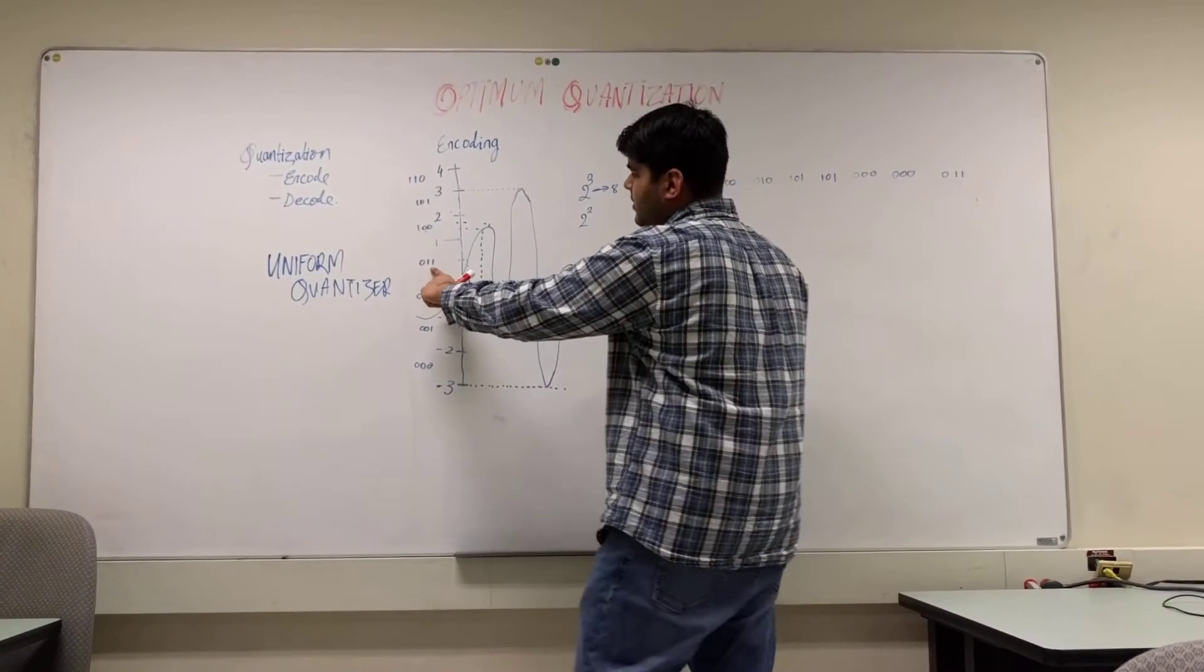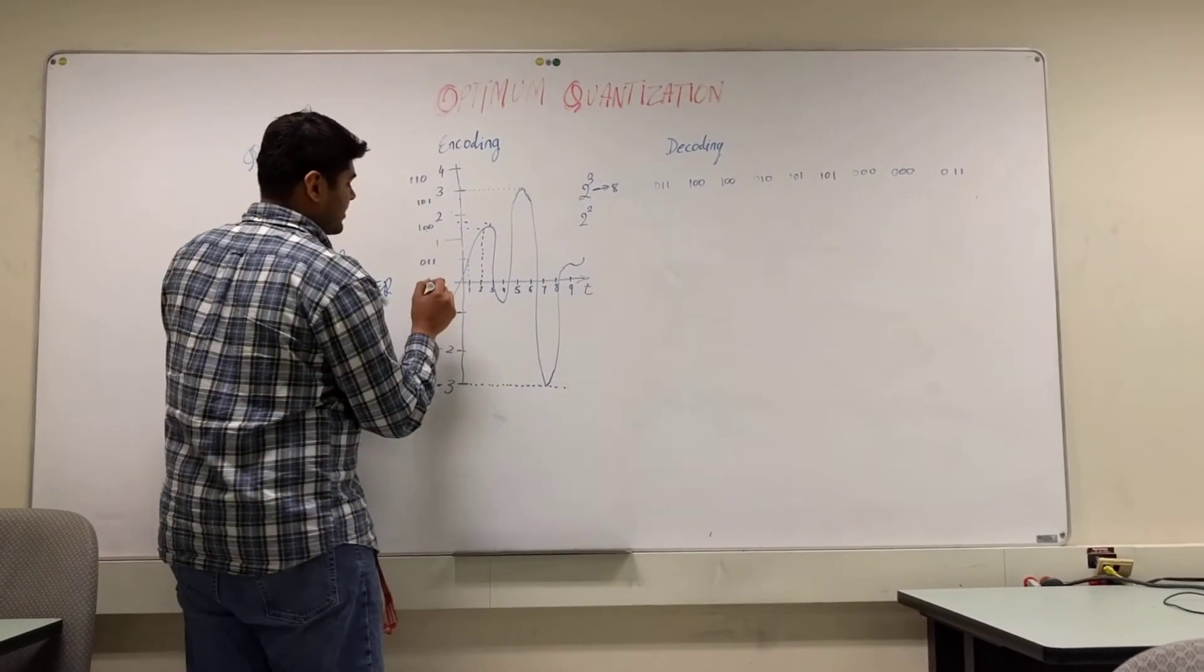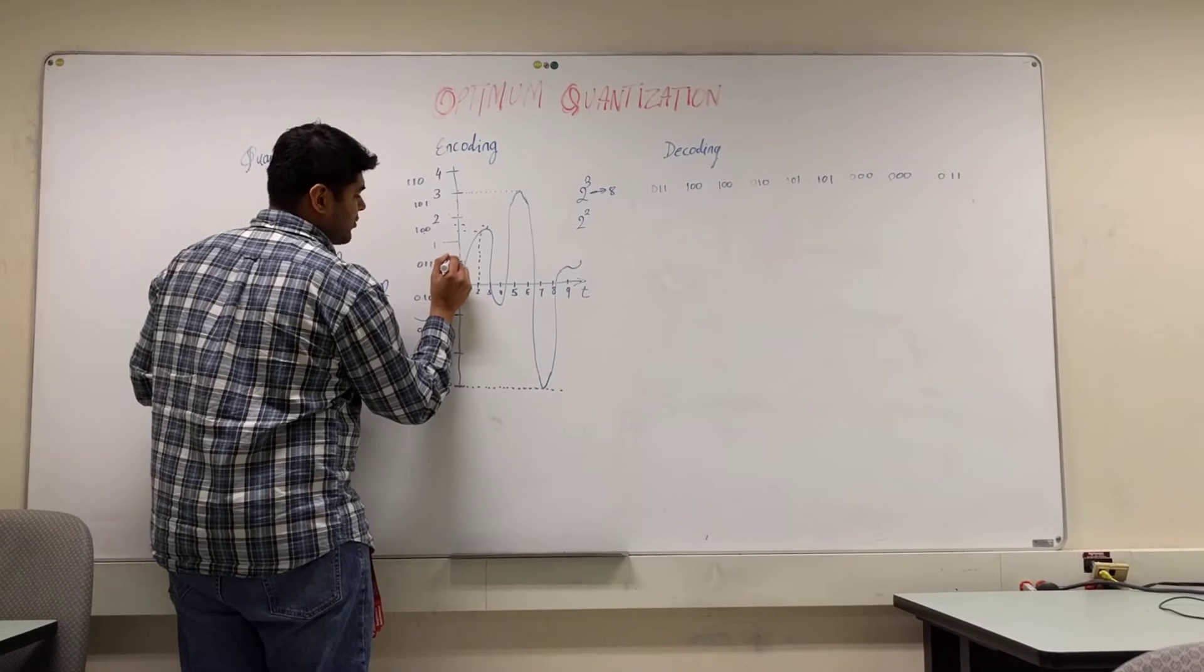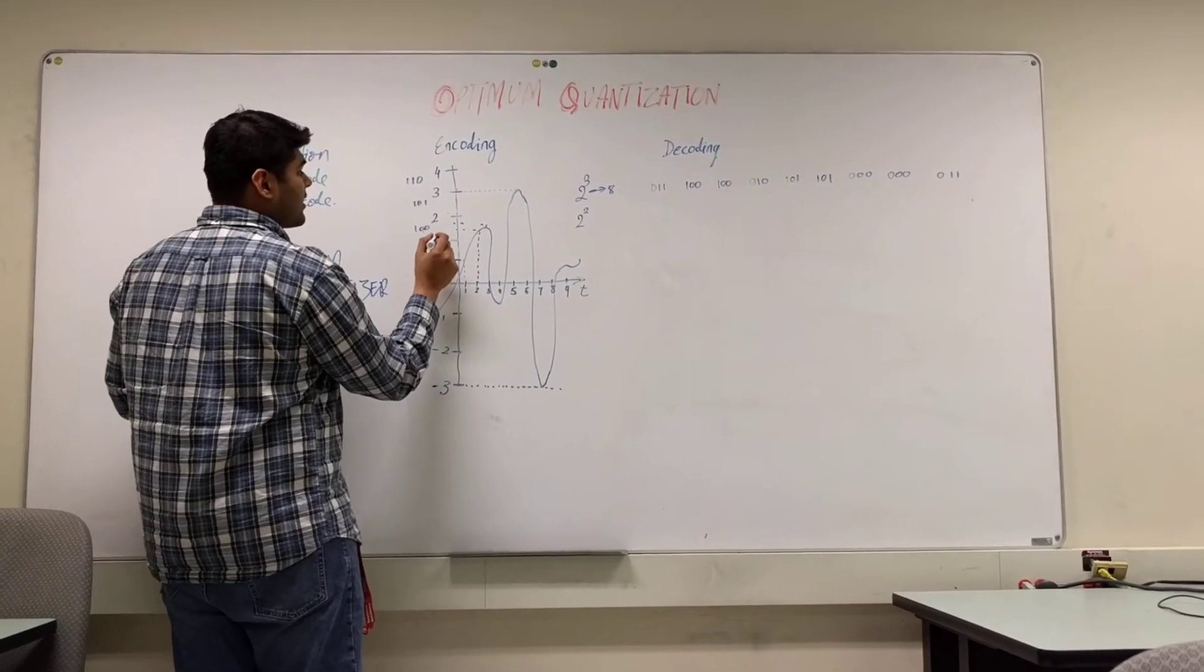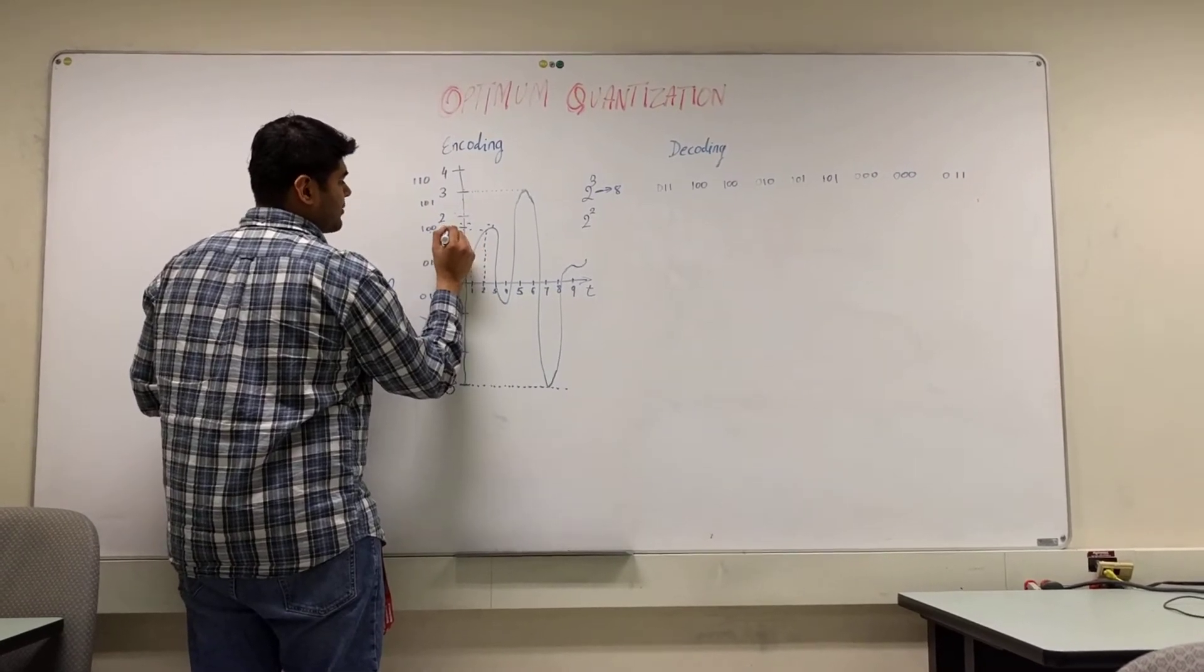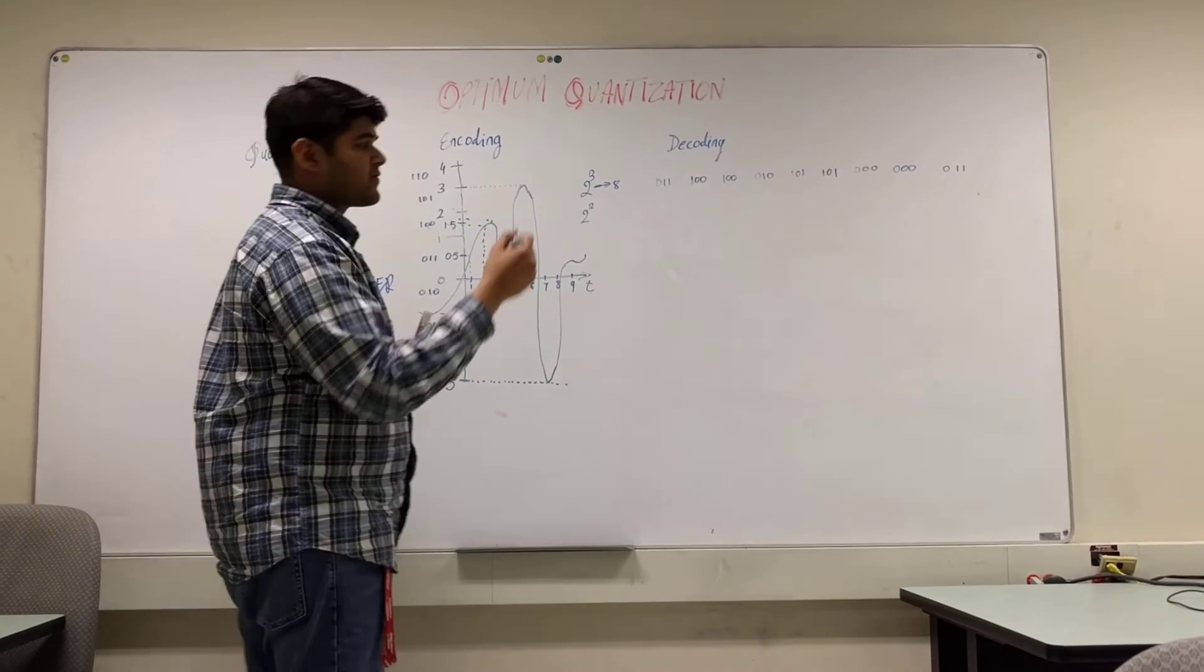So, 0, 1, 1 over here would be between 0 and 1. So, this would actually be the value 0.5. 1, 0, 0, which is between 1 and 2, would actually be 1.5, and so on and so forth.